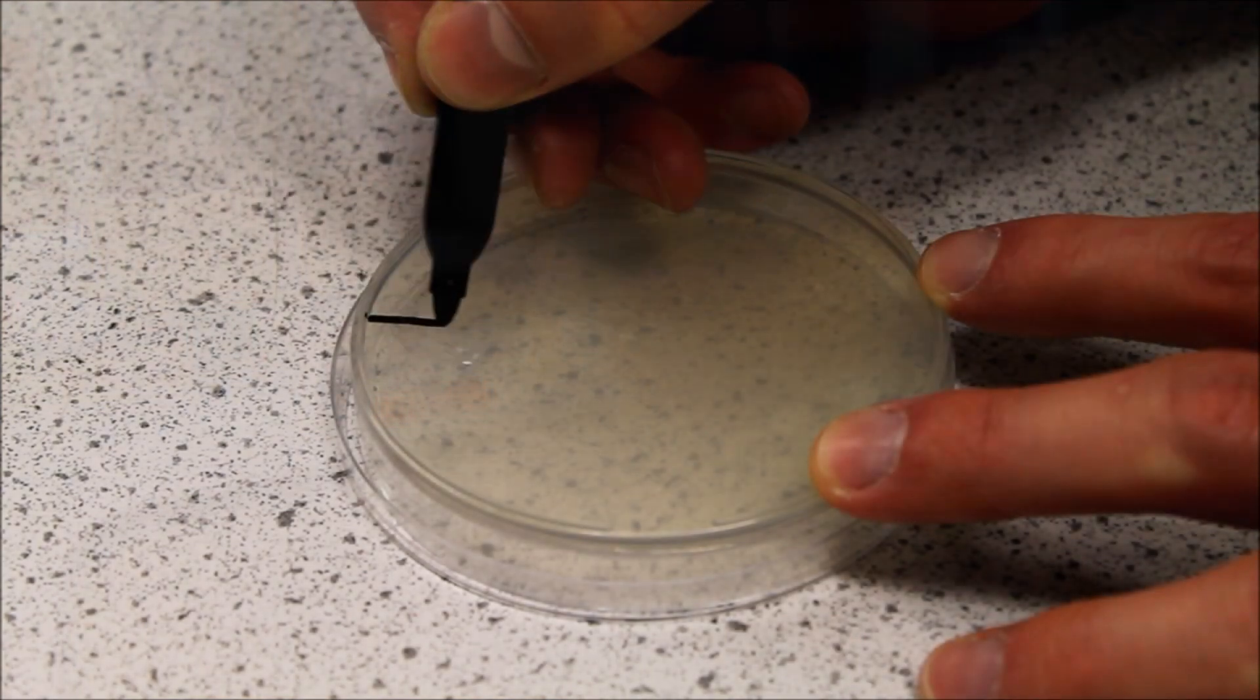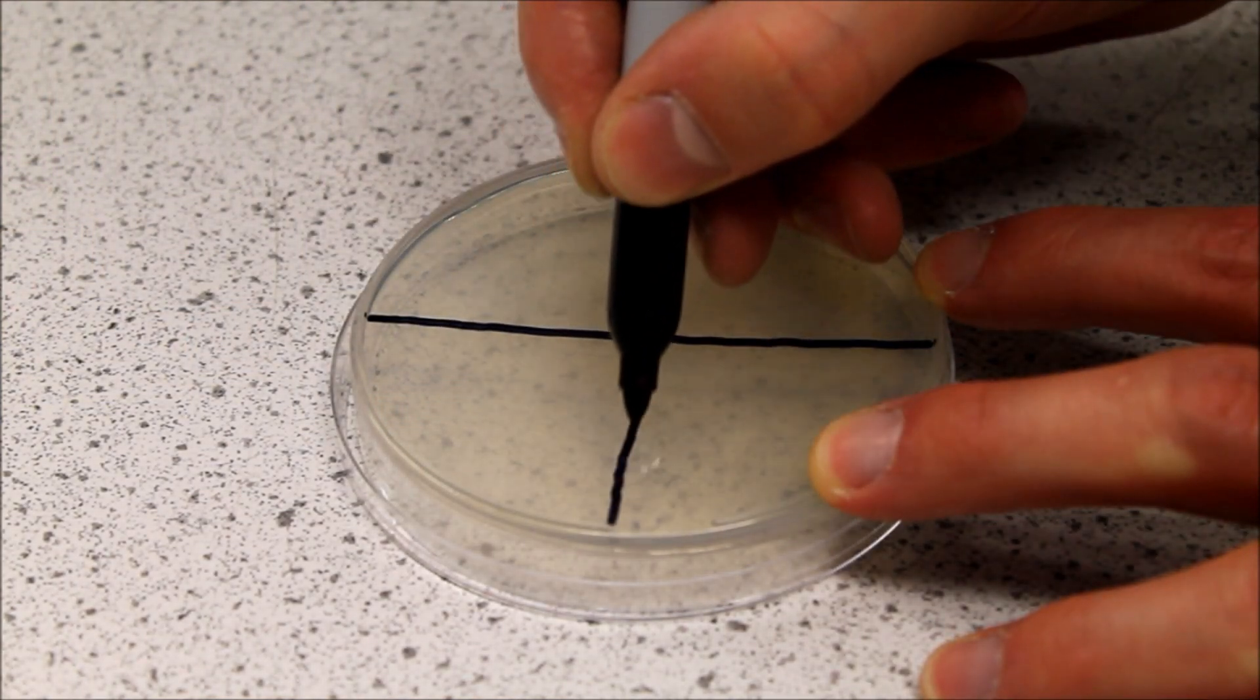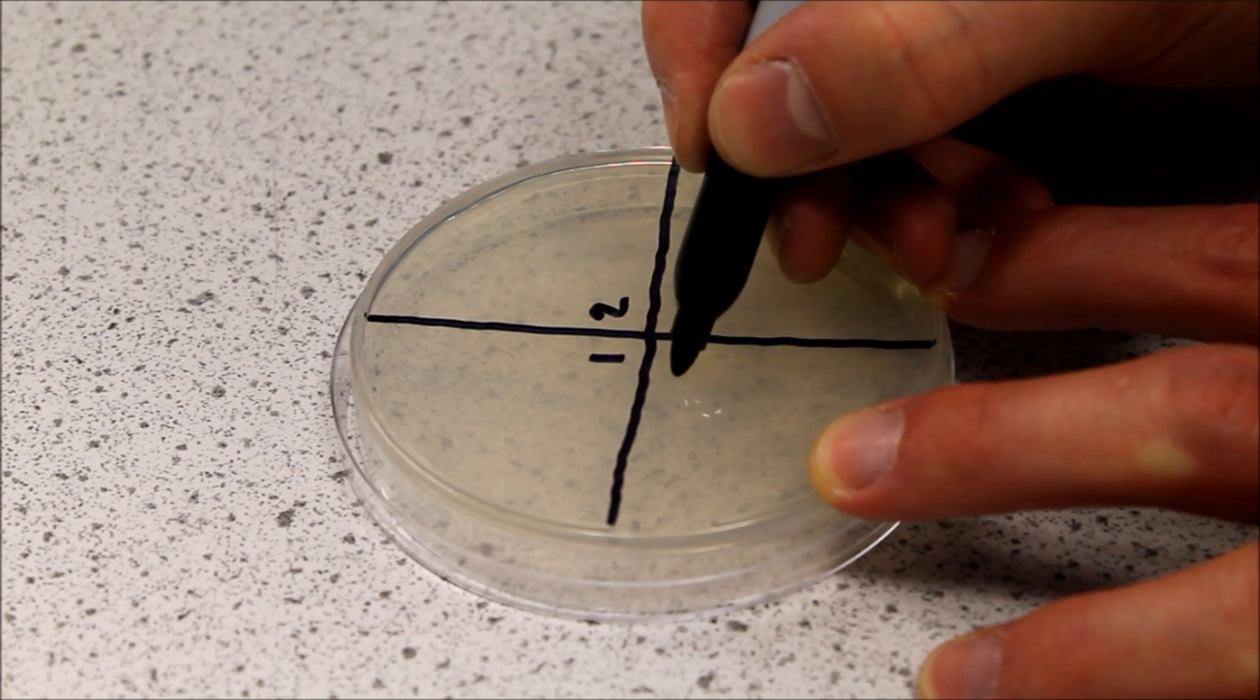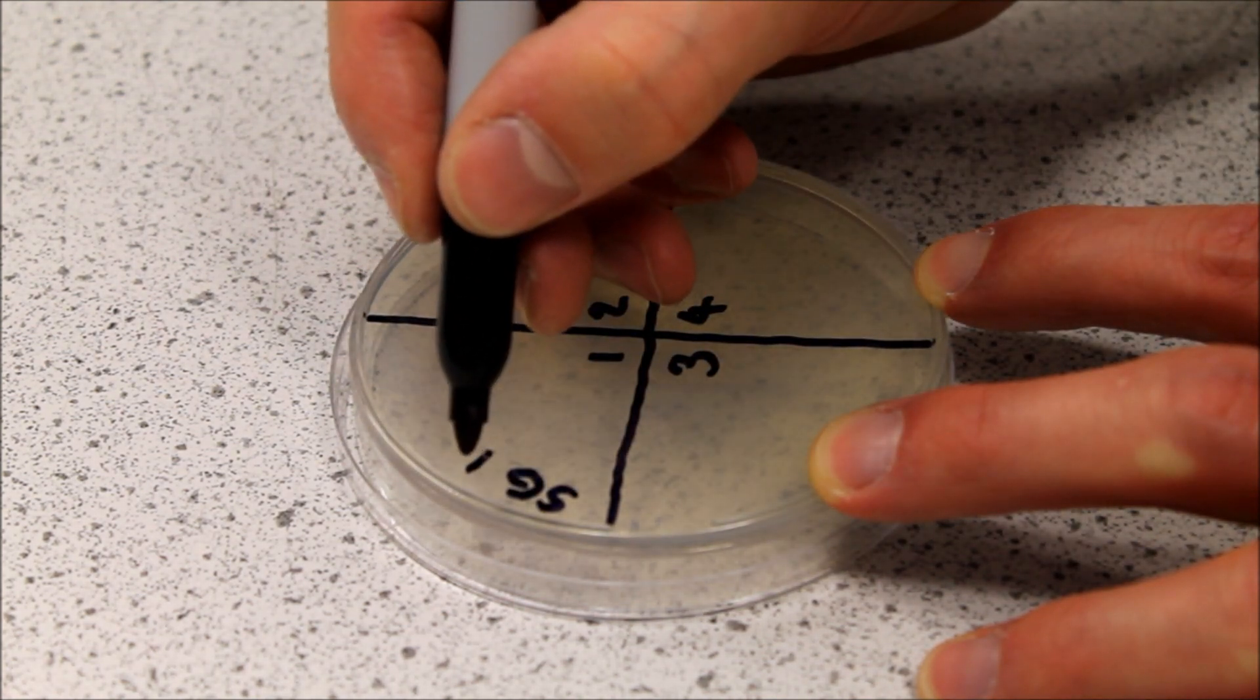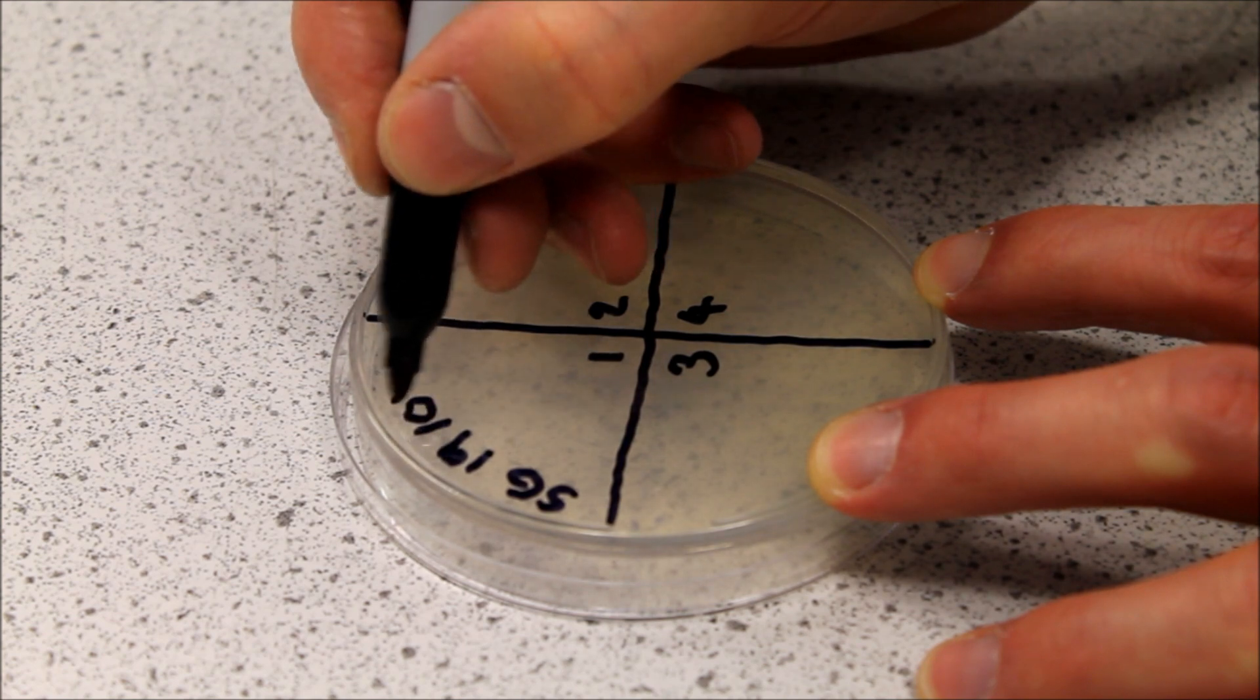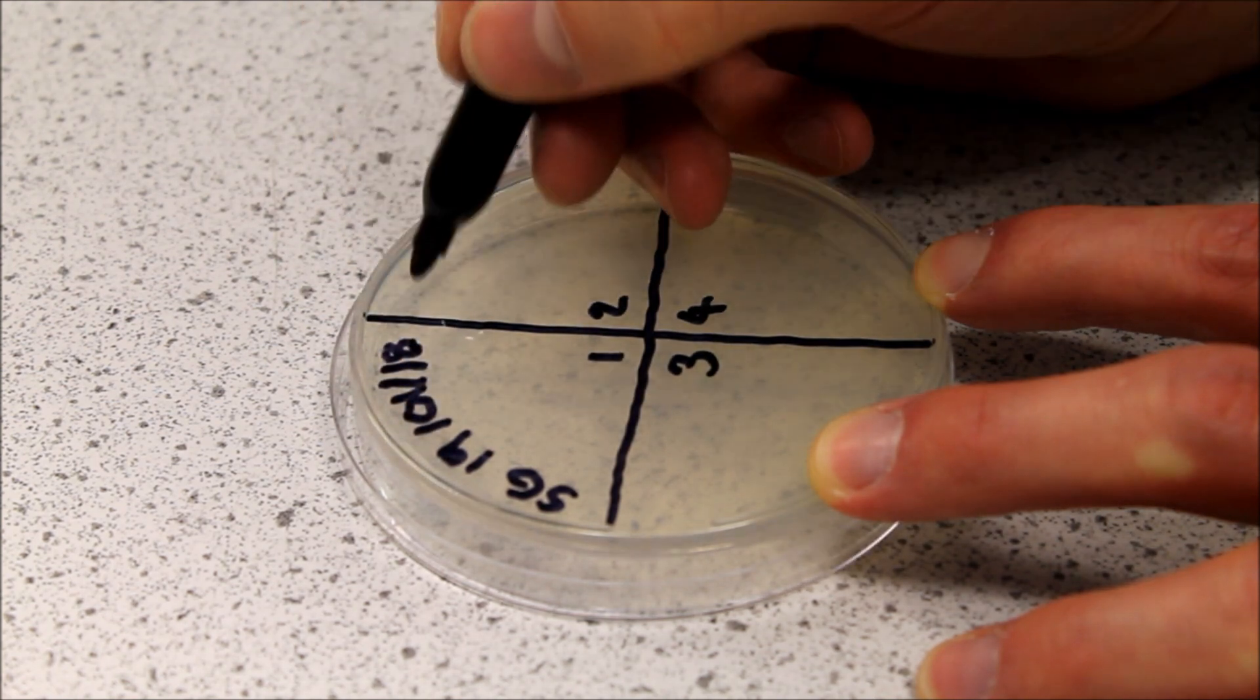Using the marker pen, divide the bottom of the agar plate into quarters and number them 1 to 4. Also write your initials, today's date and the name of the bacterium around the outside of the plate. Make sure the lid stays in place to avoid contamination.